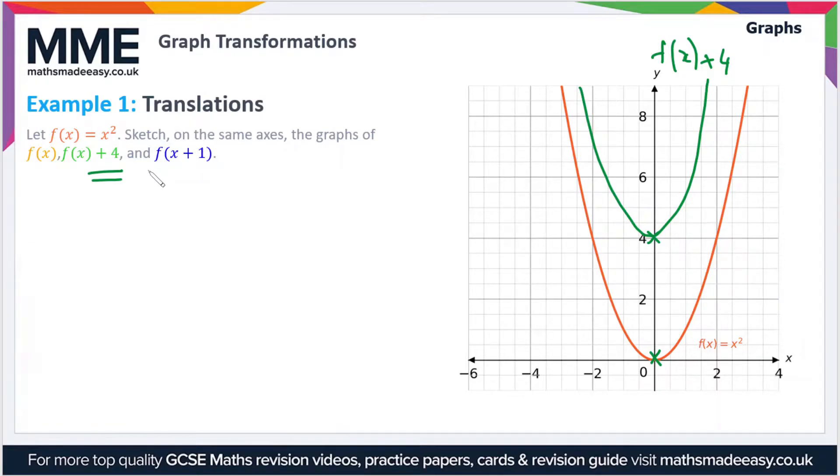Now let's move on to f(x+1). With the plus 1 inside the brackets, if you remember, if we have f(x+a), what this does is it shifts the graph by a in the negative x direction. So if a is 1, then a in the negative x direction is minus 1, so the whole graph moves left by 1.